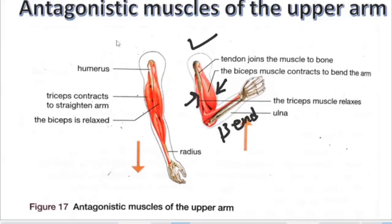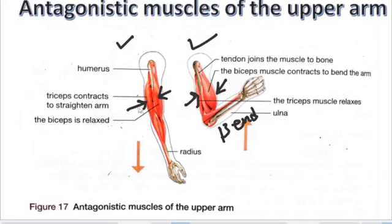When a person straightens the arm, the biceps relax while the triceps contract. To summarize: to straighten the arm, the bicep muscles relax while the tricep muscles contract; when you bend the arm, the bicep muscles contract and the tricep muscles relax. This action is called antagonistic muscles.